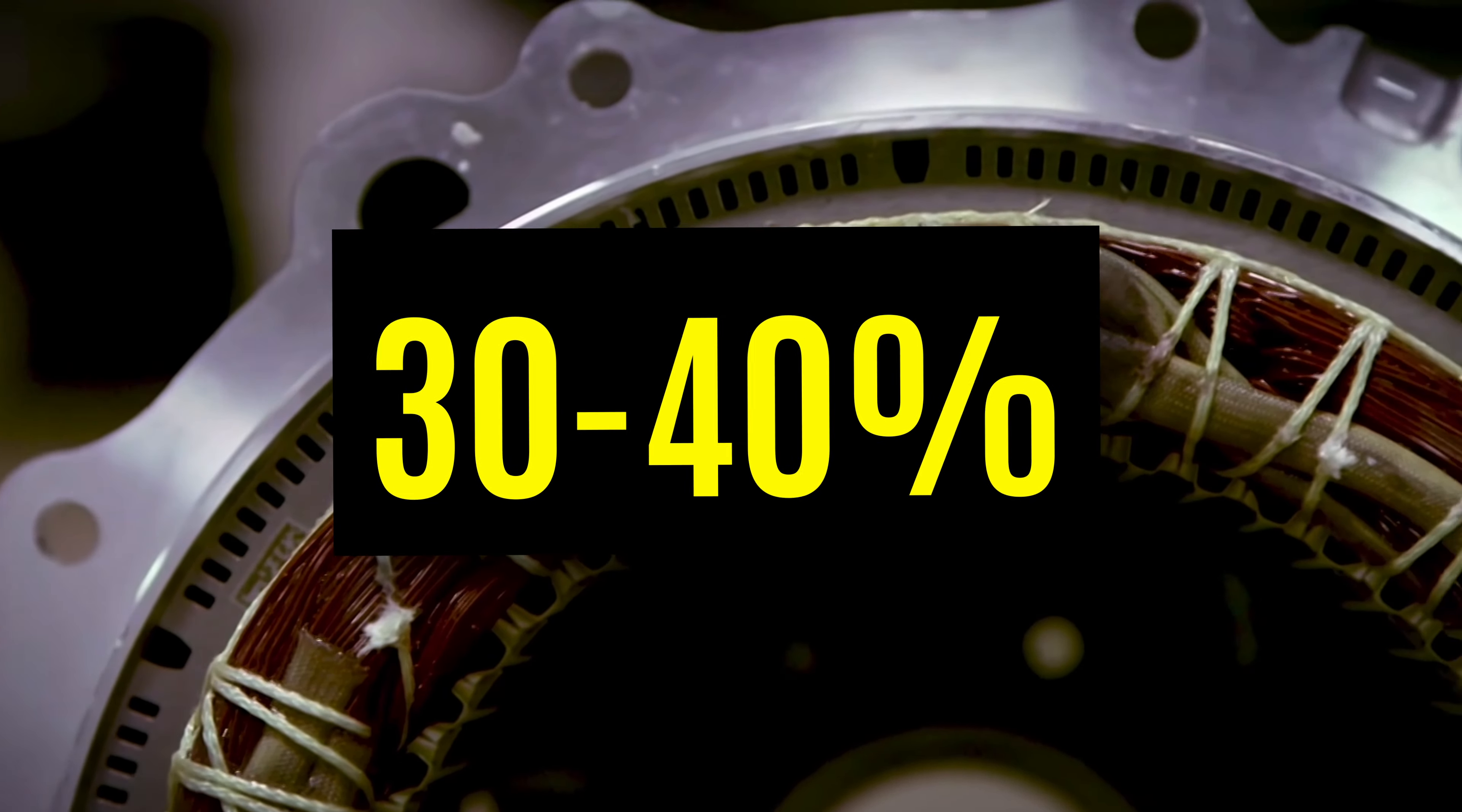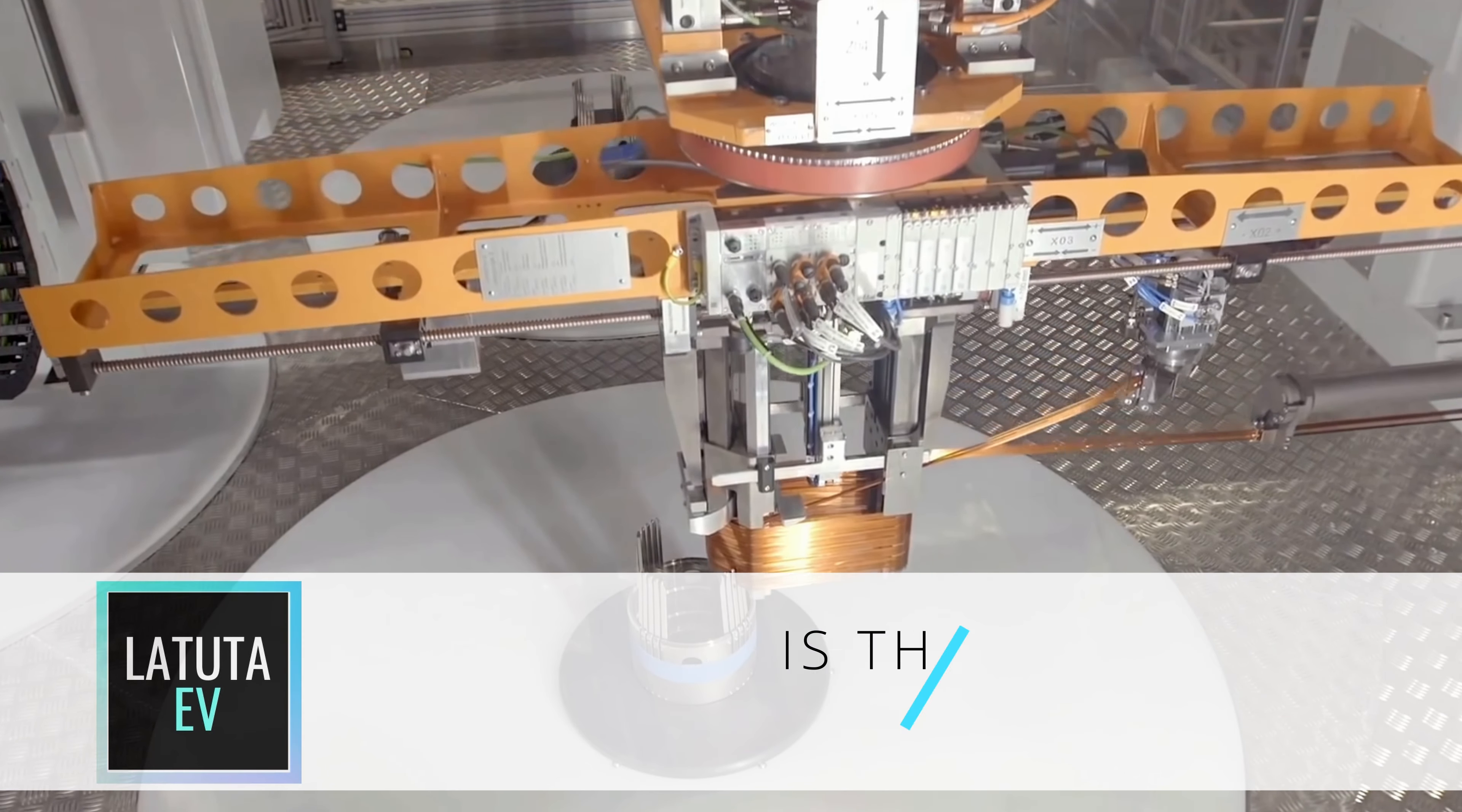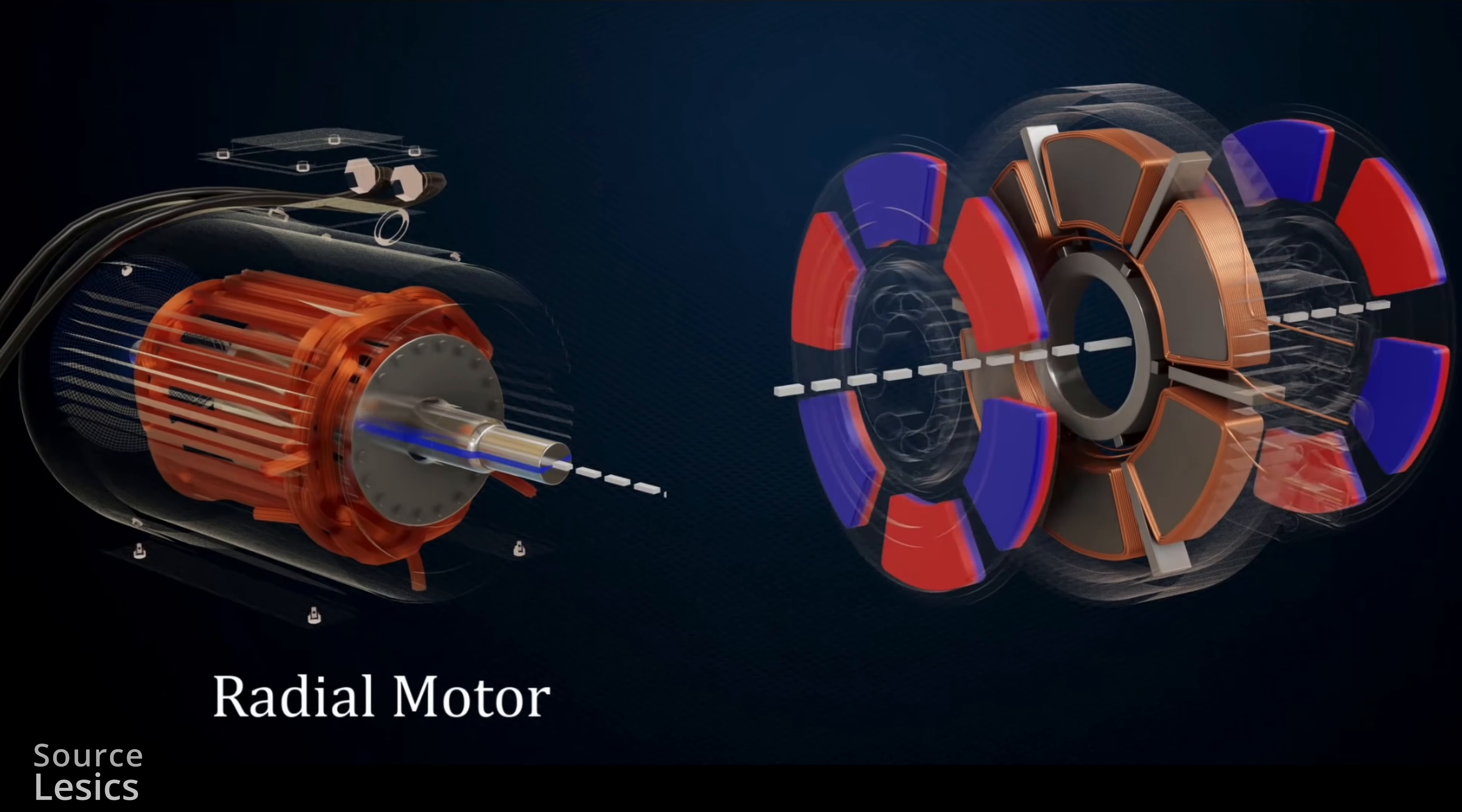This was one of the factors that allowed to increase range of Model 3 in comparison to Model S by about 40-30%. Is there another technological step that will allow EV companies to take it even further? I think this is a technology called axial flux motors.